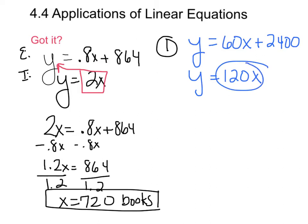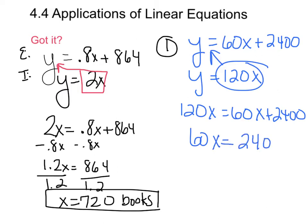So I'm going to take this, plug it in using substitution. 120X equals 60X plus $2,400. Subtract 60X on both sides. That would give me the equation 60X equals $2,400. If I divide, $2,400 divided by 60, that gives me 40. X is the number of bicycles. So your answer is 40 bicycles.